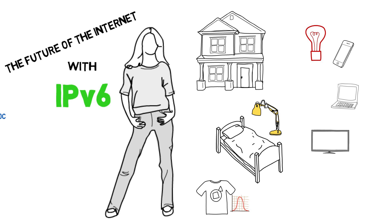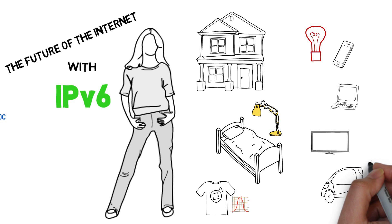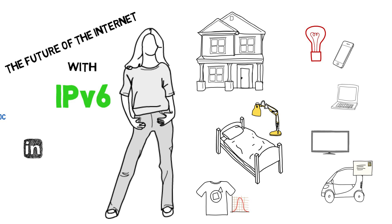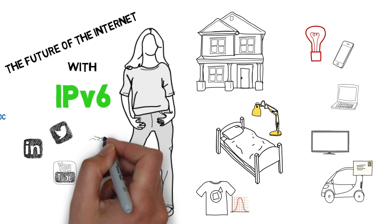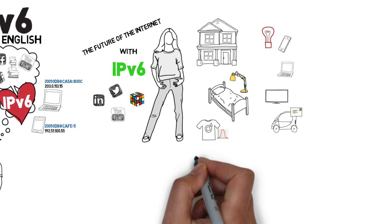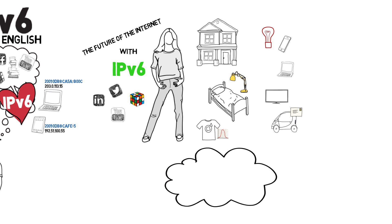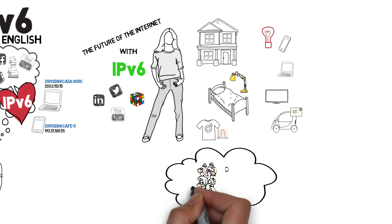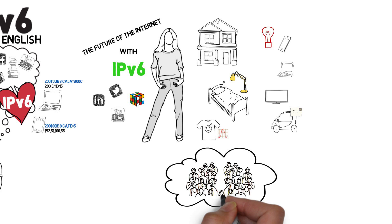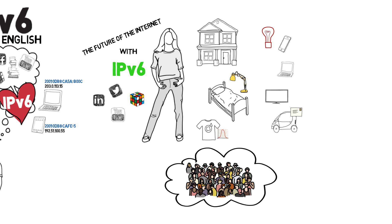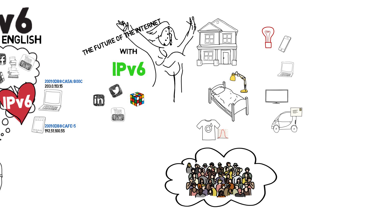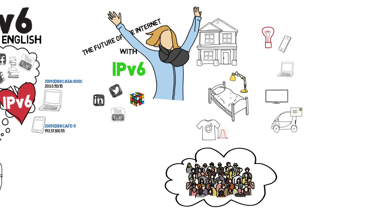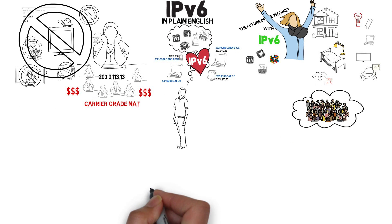Grace will wear smart clothes to constantly monitor her health, and her car will send a message every time it needs maintenance. Social networking, file sharing, video conferencing and games will run better and better, and will be very impressive. Grace will be happy because more and more people will be connected to the network. Digital inclusion will be a reality. She and many other users may have never heard of IPv6, but they will be very happy with this new Internet.